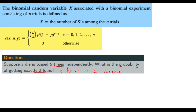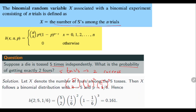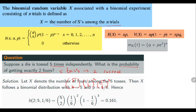Binomial random variable counts the number of successes among n trials. Out of five trials you are looking for two successes. The probability of getting a four is one by six, so for two fours it is one by six squared. The probability of not getting a four is five by six. So the answer is 5C2 times (1/6)^2 times (5/6)^3. For binomial, remember: expectation is np, variance is npq where q is one minus p.